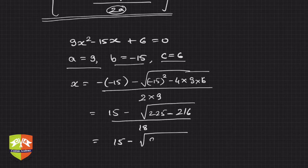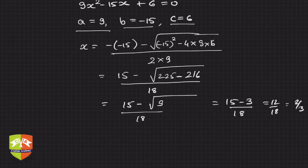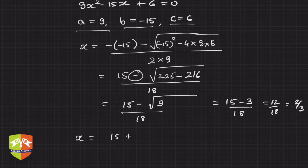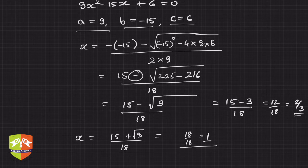So x = (15 ± √9) / 18 = (15 ± 3) / 18. One value is x = (15 - 3)/18 = 12/18 = 2/3. The other value is x = (15 + 3)/18 = 18/18 = 1. So the two solutions are 2/3 and 1. These were verified using the quadratic formula, and now we will solve the same using completing the square.